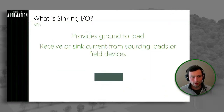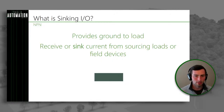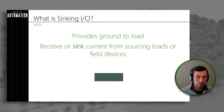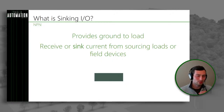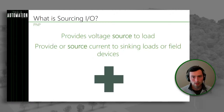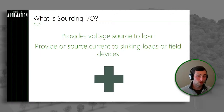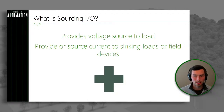So now let's get to the confusing part — what is sinking IO? The easiest way to remember this is that it's providing ground to the load. Ultimately this means we're receiving or sinking current from a sourcing load or field device. Sinking and sourcing are always complementary to each other — if we have a sinking IO module, our field device or load is going to be sourcing. That's sinking: it provides ground to the load. Now, sourcing IO provides a voltage source to the load — another way to think about it is providing or sourcing current to a sinking load or field device.